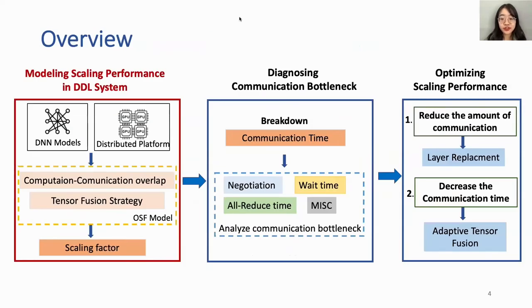Here is the overview of our research. First, we model the scaling performance in the DDL system. Given training tasks, DNN models, and distributed platform settings, we build the OSF model to capture two important features: computation-communication overlap and tensor fusion strategy, outputting an estimated scaling factor. Second, after obtaining the scaling factor, we diagnose potential communication bottlenecks by breaking down communication time. Finally, based on different bottlenecks, we optimize in two directions: one is to reduce the amount of communication via layer replacement, and another is to decrease communication time via an adaptive tensor fusion strategy.